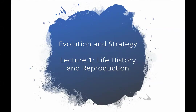Welcome to the first lecture in the series on evolution and strategy: lecture one, life history and reproduction. The lives of animals follow a standard pattern — they are born, they feed and grow, they try to survive, reproduce, and have offspring before they die. Those organisms that successfully survive and reproduce pass on their genes, enabling their offspring to do the same. In this series we will consider how natural selection has shaped and optimized the development, behavior, and life stories of animal species, leading to many surprising, often counterintuitive results.